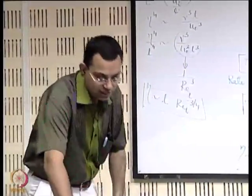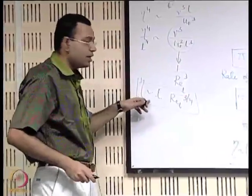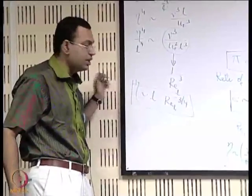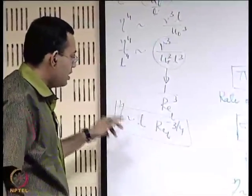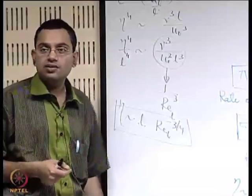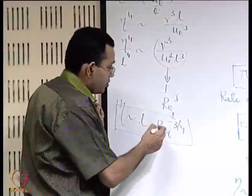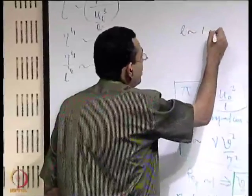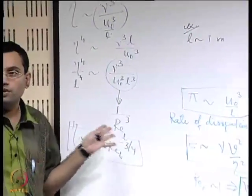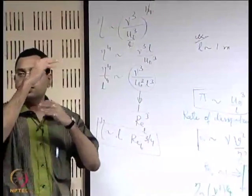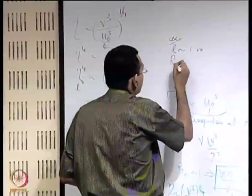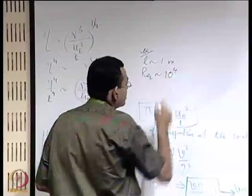To quantify that, let us say we are interested to get a feel of the difference between the system length scale and the Kolmogorov length scale, or the smallest eddy length scale. The system length scale, or the largest eddy length scale, is sometimes known as the integral length scale. Let us say that l is of the order of 1 meter as an example — the largest eddy is also of that length scale — and let us say that the Reynolds number is 10 to the power 4.